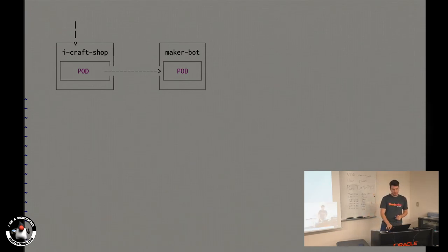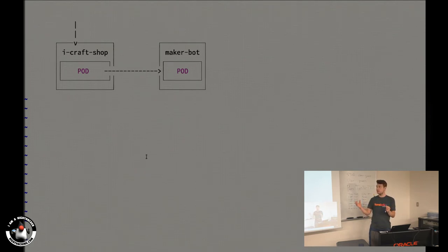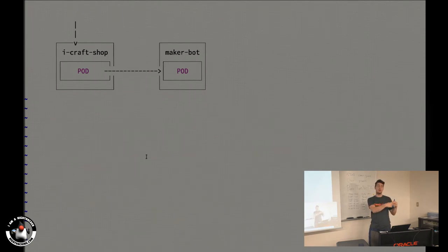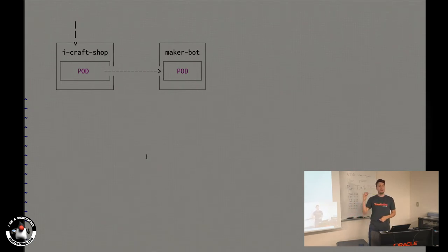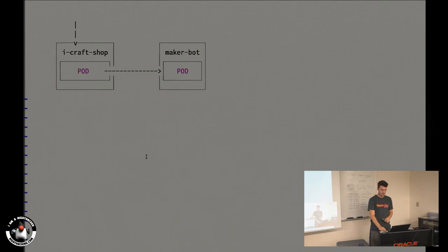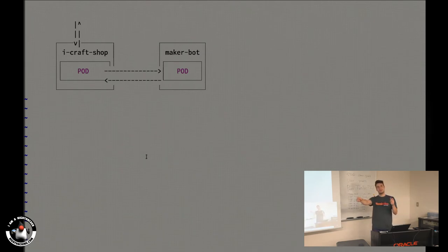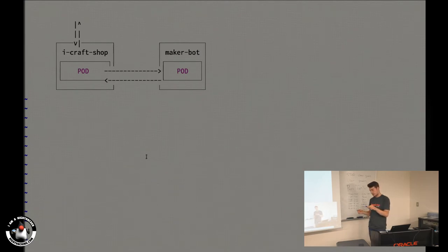In the diagram, the purple represents a pod in Kubernetes. You have a Kubernetes service for the instrument craft shop and one for the maker bot — two microservices. Traditionally in a Kubernetes-only solution, each pod contains one running Docker container: your actual application. The first application calls the second one synchronously and returns a response over the Kubernetes cluster network.